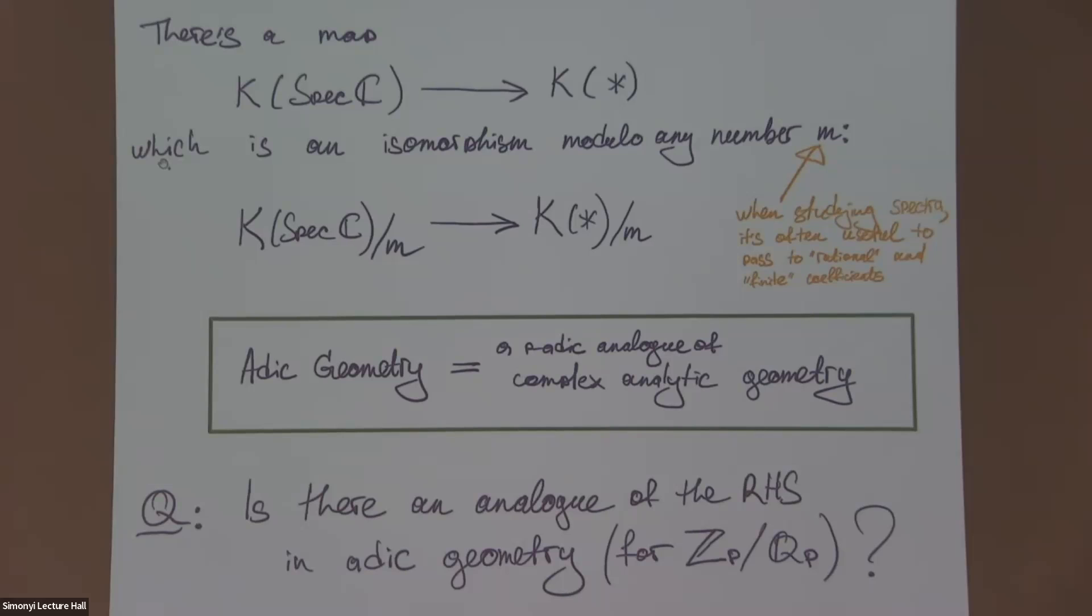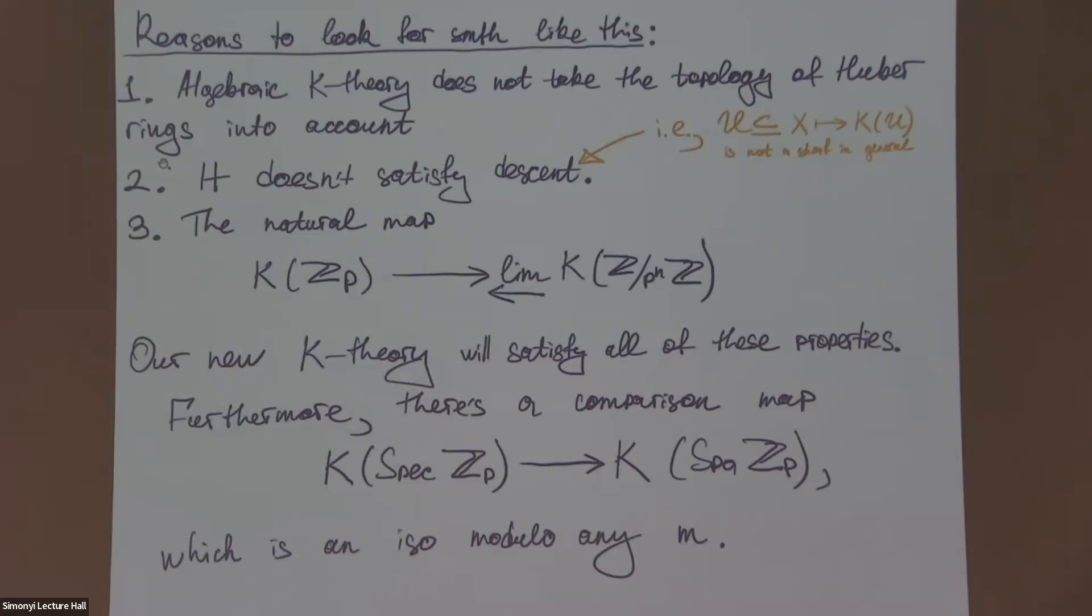If you want to ask what happens when you pass to rational coefficients, this question is a little crazy because on the left-hand side you'll have something that has to do with algebraic cycles. On the right-hand side, you'll have something which is entirely topological. But with finite coefficients, it's a reasonable question. It turns out that for this very specific variety, this is just an isomorphism. Now you can ask, how can we do the same thing but over p-adic fields?